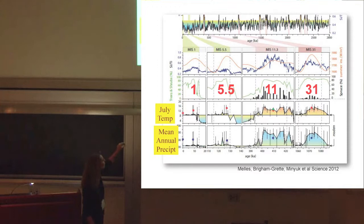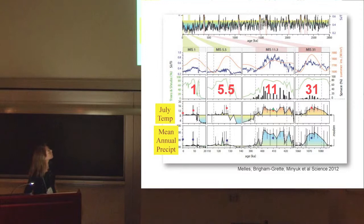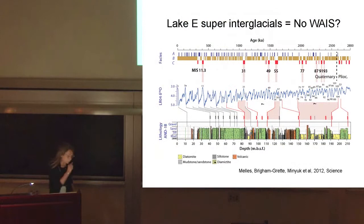The only other time we get comparable warmth is stage 11, about 410,000 years ago — much wetter and much warmer than we'd ever seen before. This raises some interesting challenges. If stage 31 is the Fish Creek interglacial offshore in the marine environment, then stage 11 would be what we call the Wainwright interglacial offshore in the marine environment. But we need to get that connection much more solidified.